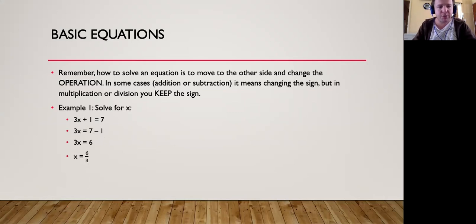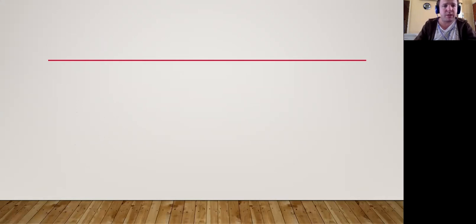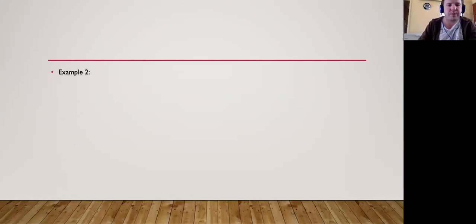Then we divide by 3, so 6 divided by 3 gives an answer of 2. Example 2: minus 4x minus 5 is equal to minus 17.